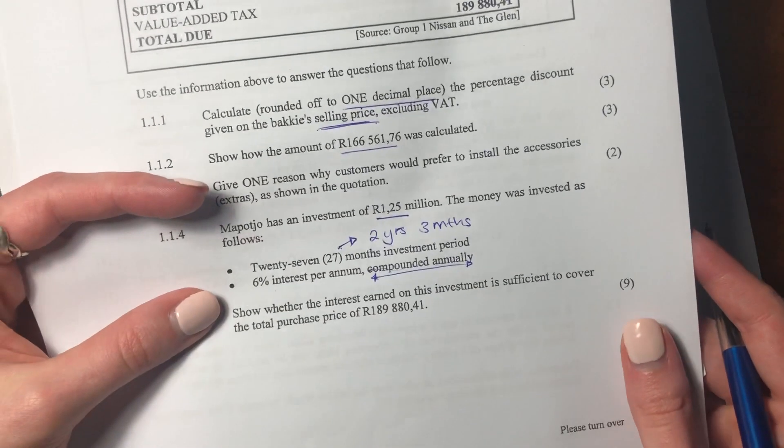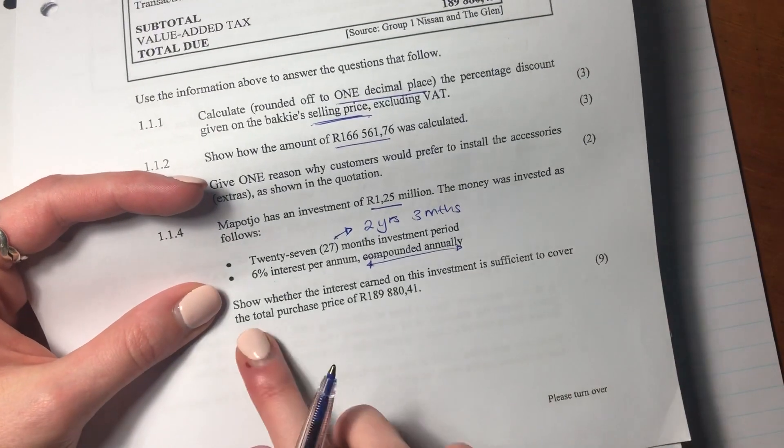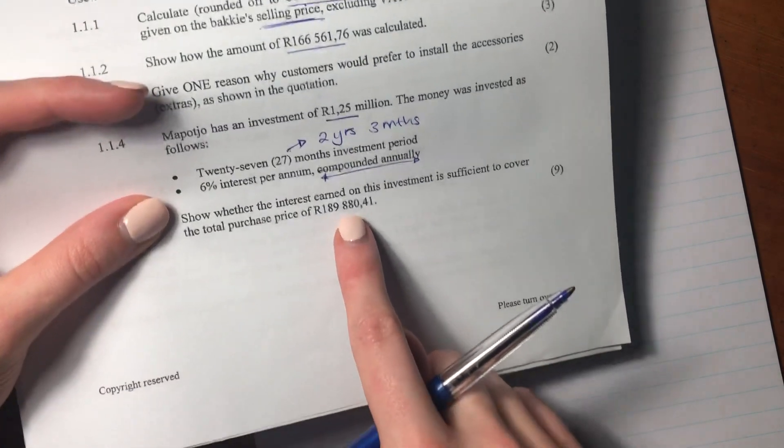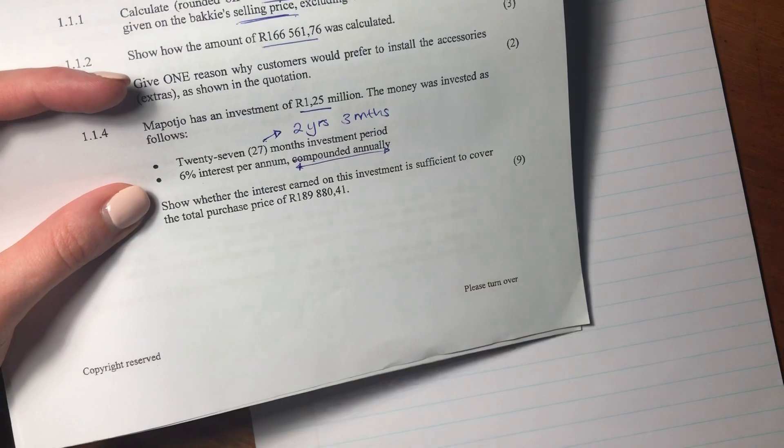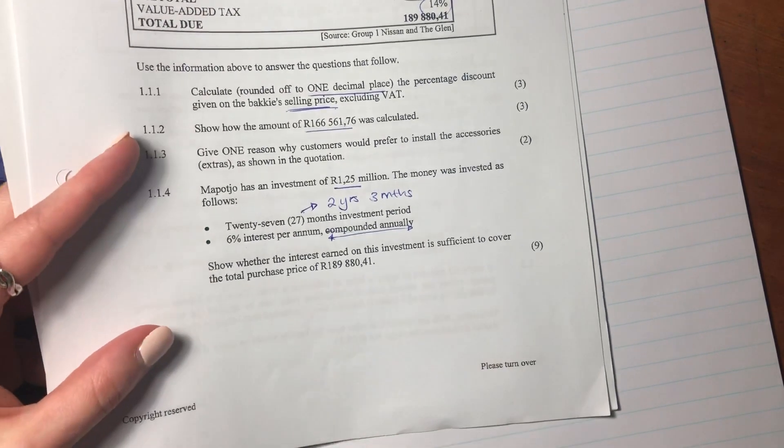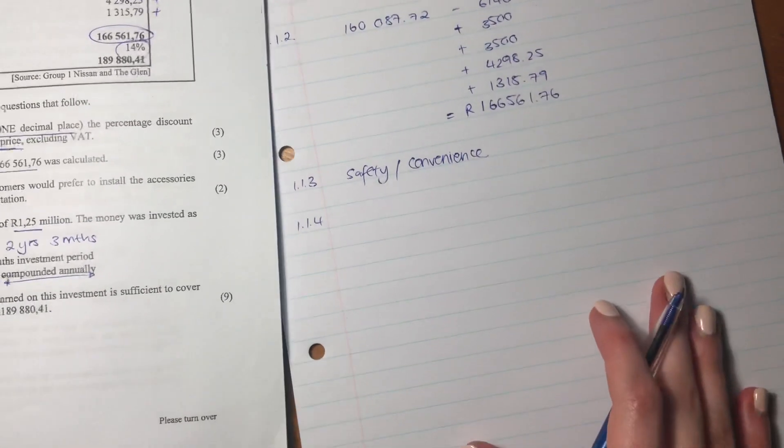So it says show whether the interest earned on this investment is sufficient to cover the total price of 189880.41. So it's saying the interest. So you could be saying obviously there's enough money, she got 1.25 million rand. That's not the question. They're asking whether the interest on the investment can be used to pay for the car or for the bucky, and then she still has the 1.25 million. So it's important to understand that nuance. So let's figure out how much interest she earned over these 27 months.